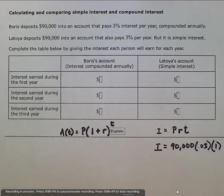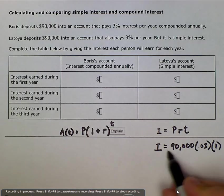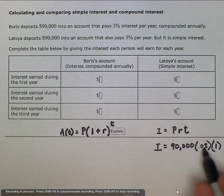So after one year, we have 90,000 times 0.03 times 1, which is going to be equal to 2,700.